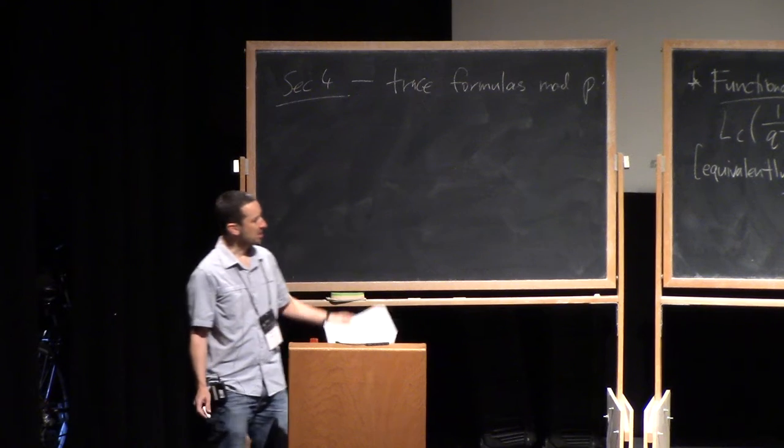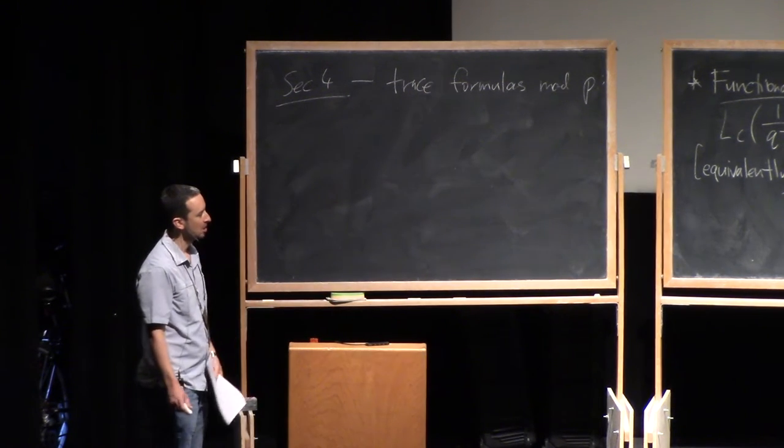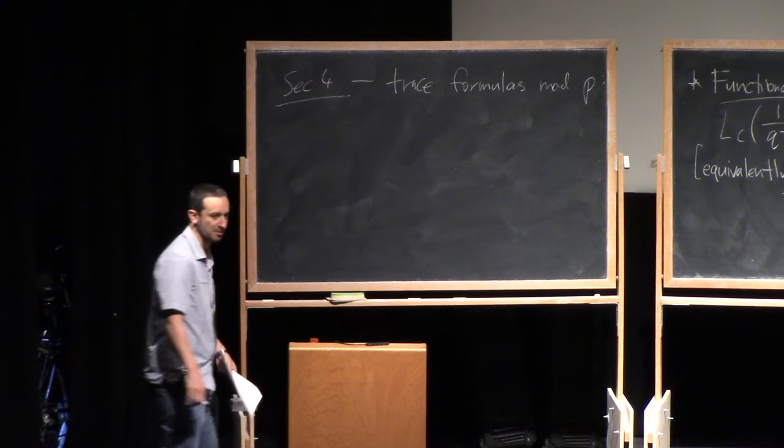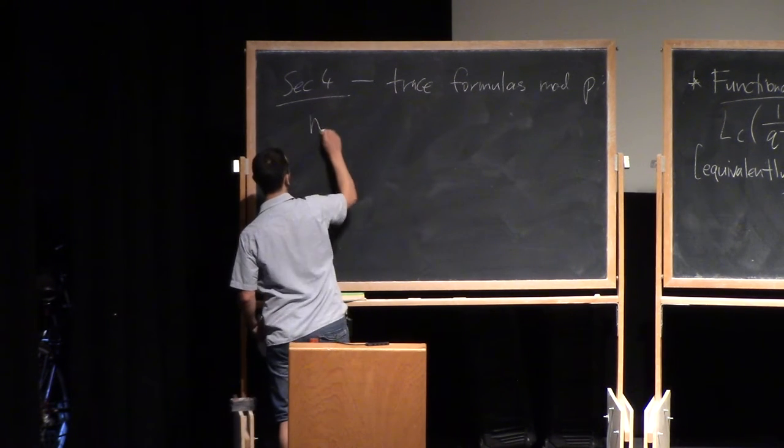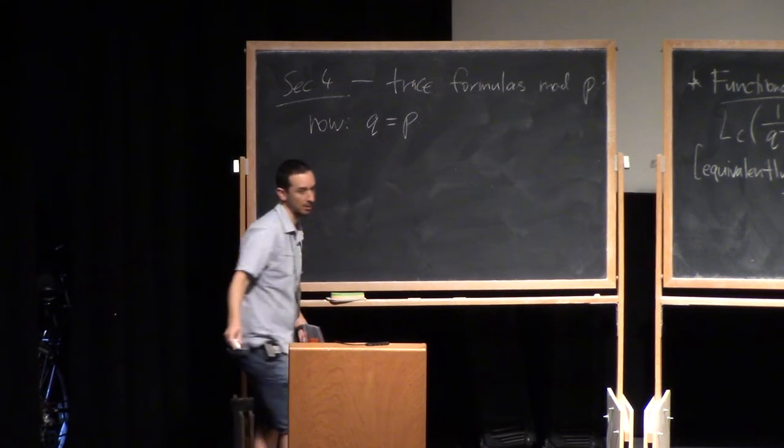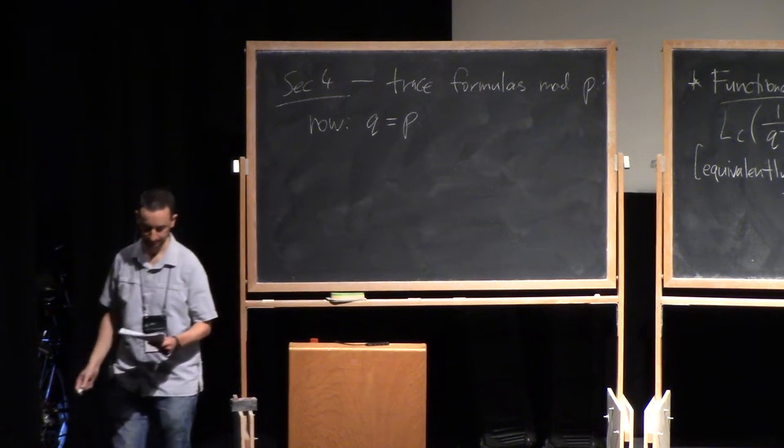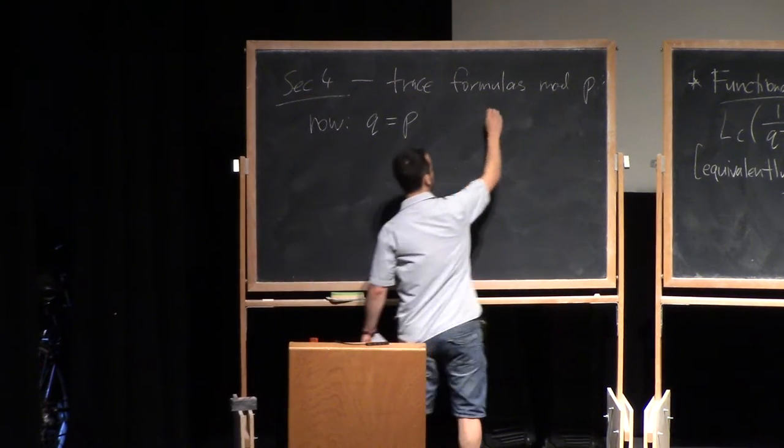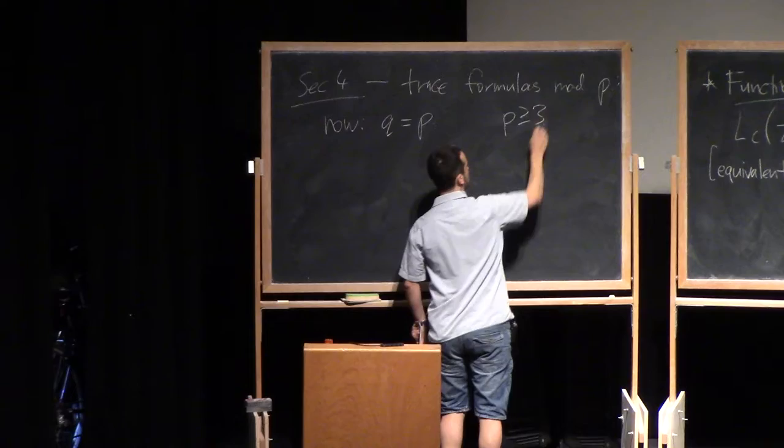Now, in section three, what I just finished, I was working over F_Q, but from now on, I'm working over F_P. Okay, so now Q is equal to P. Just to keep our lives simple. And P is odd. P is an odd prime.